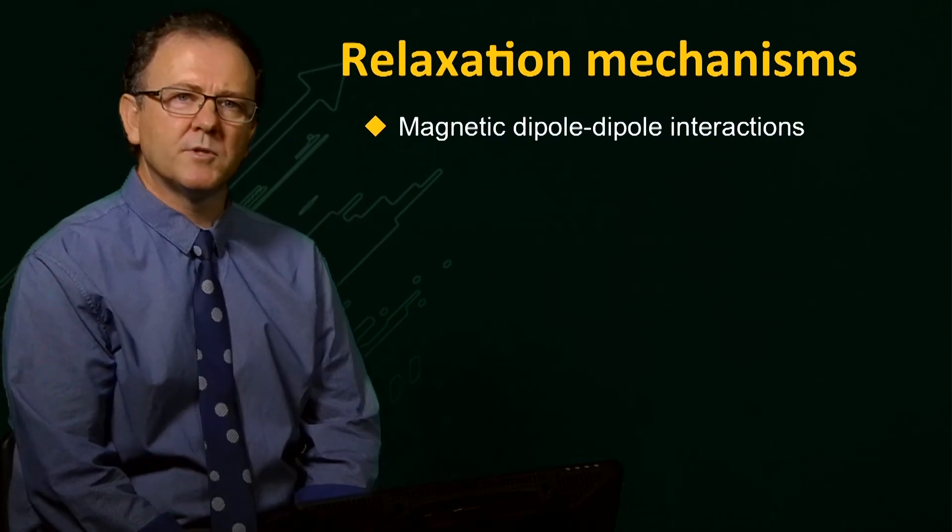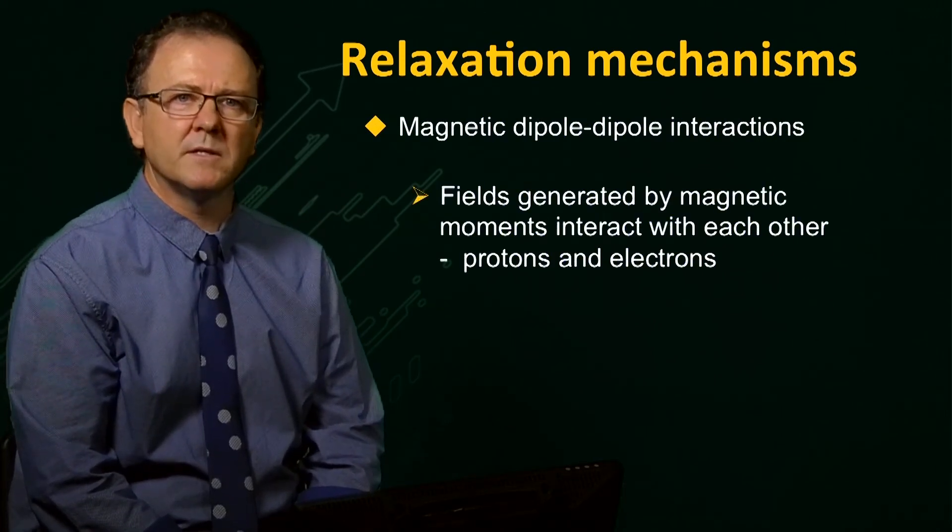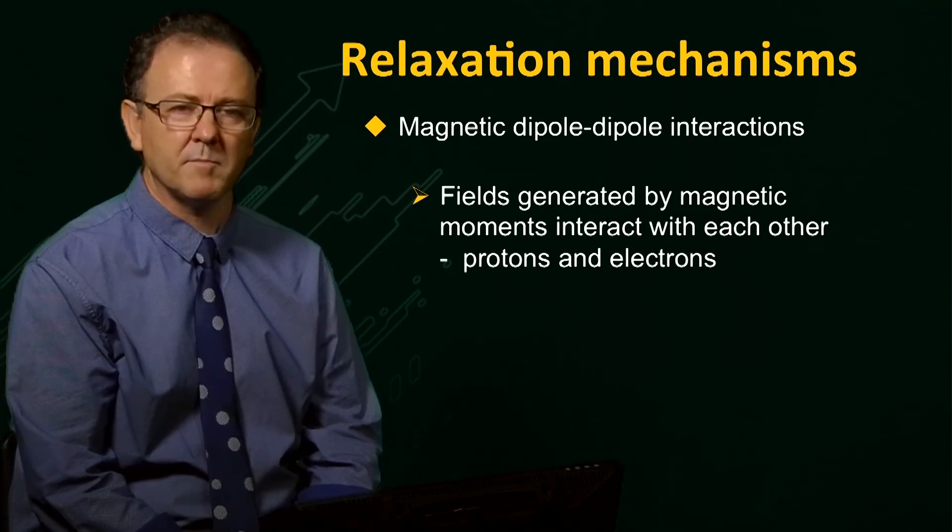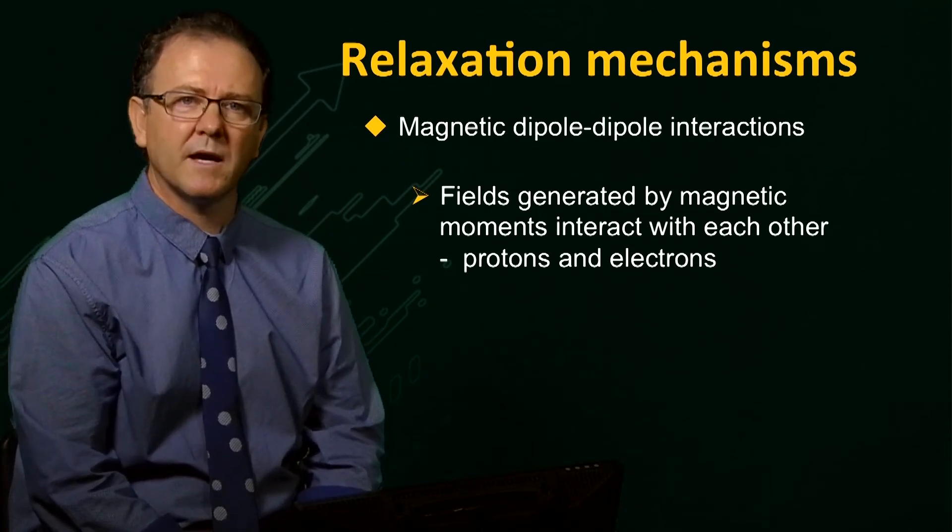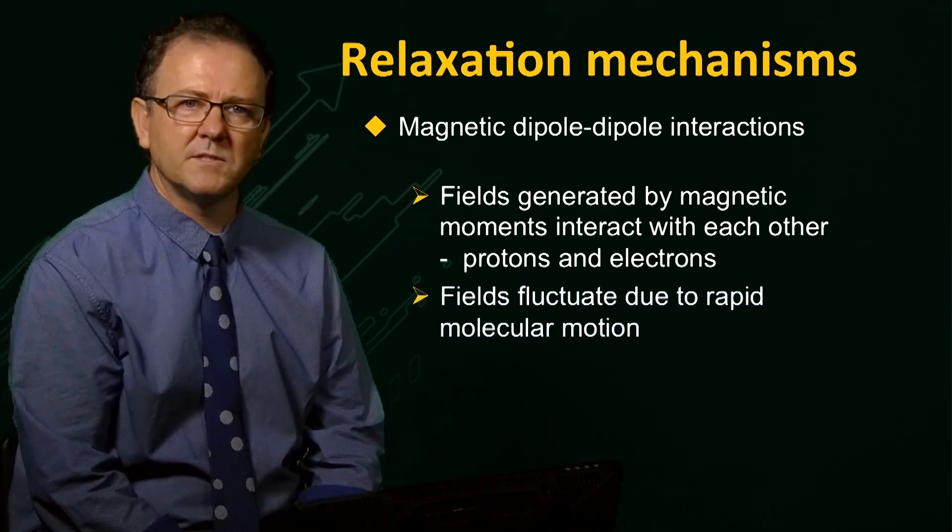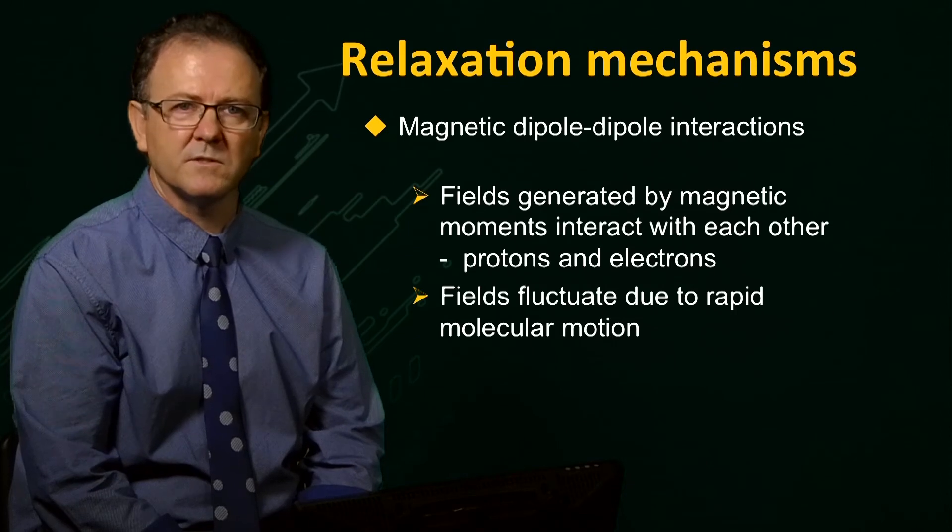The basic principle is that the nuclear spin is subjected to a range of magnetic fields generated by other magnetic moments, or dipoles, associated with other nuclei and also the electrons. The effect of these fields drops off with distance through space.